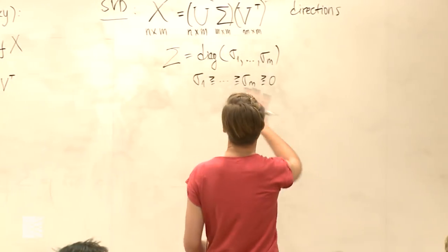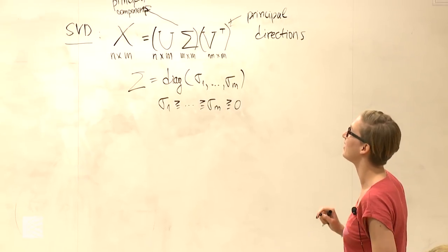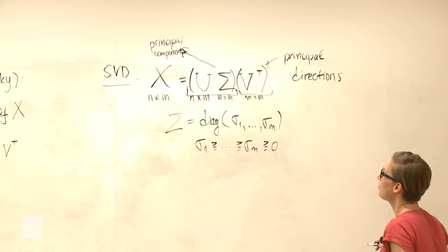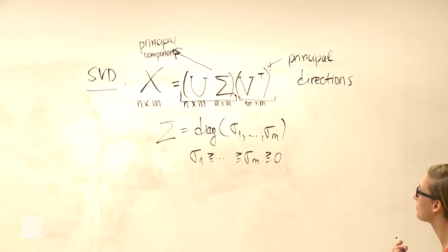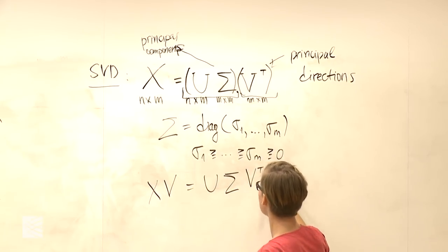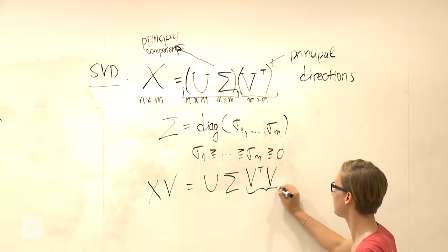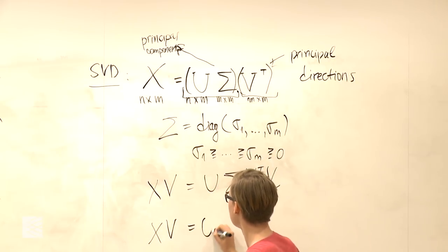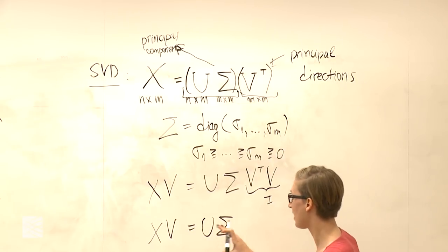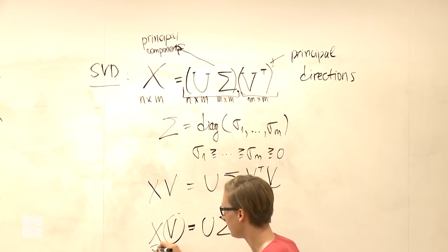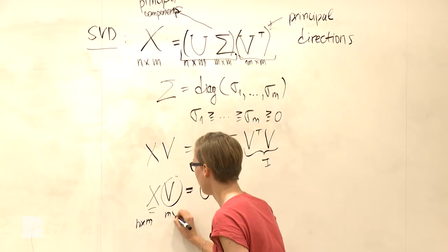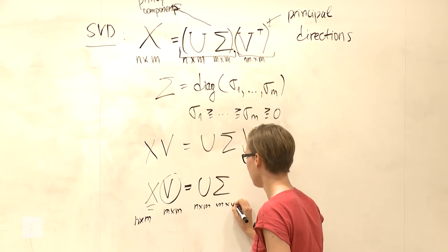So with SVD as a dimensionality reduction technique — related but different from low-rank approximation — I can multiply the data matrix X by V to get U Sigma V^T V, and since V has orthogonal columns, V^T V equals the identity. So X times V equals U Sigma. But wait — the dimensions are N by M times M by M, giving N by M. I didn't actually reduce the dimension.